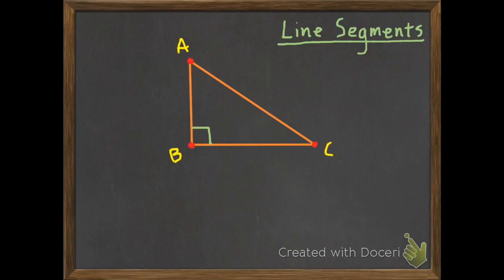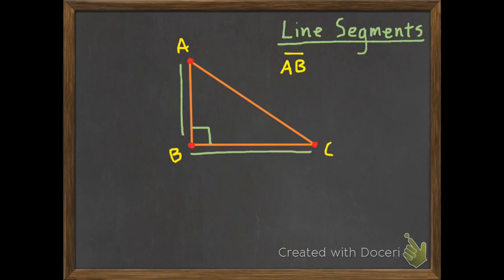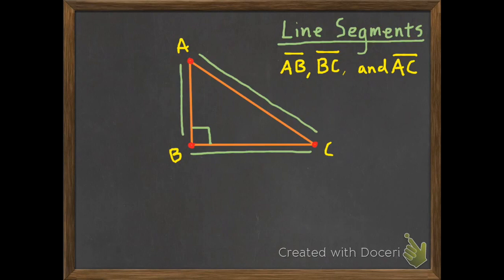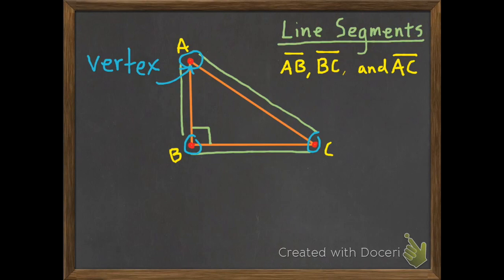Our triangles are also made up of line segments, which we talked about earlier in the chapter. We have a line segment from point A to point B, written as line segment AB with a line above it. We have line segment BC and line segment AC. Another new vocabulary word is vertex — a vertex is the point where two line segments meet. So we have vertex A, vertex B, and vertex C.